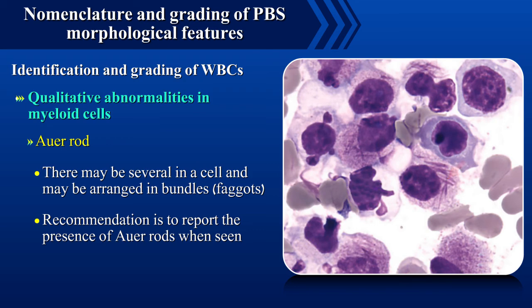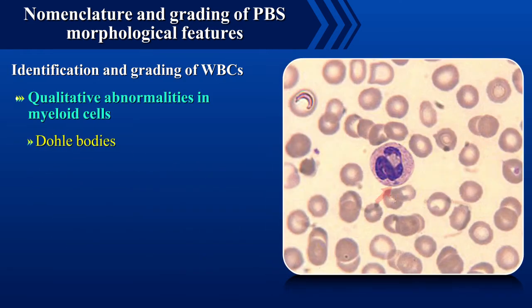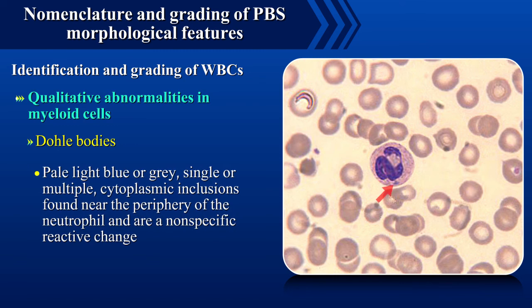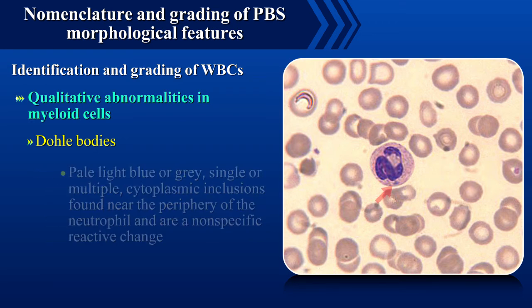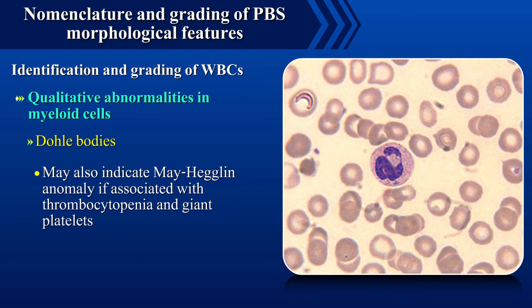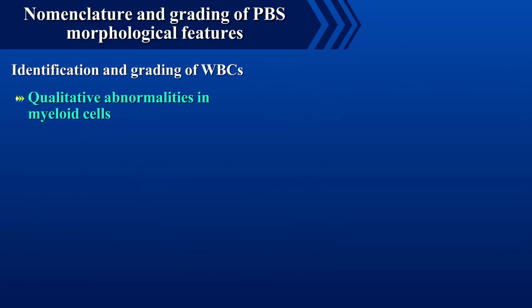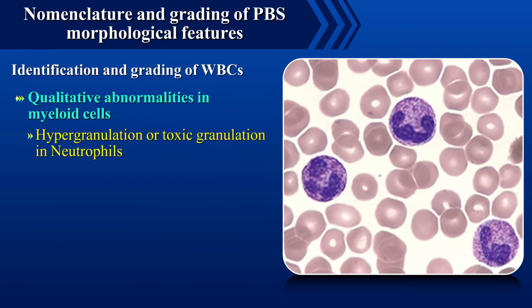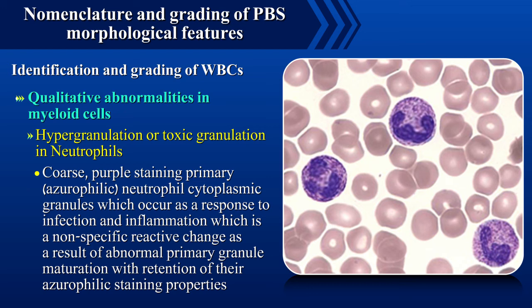The recommendation is to report the presence of Auer rods when seen. Dohle bodies are pale, light blue or grey, single or multiple cytoplasmic inclusions found near the periphery of the neutrophil and are a non-specific reactive change, but may also indicate Mhaglin anomaly if associated with thrombocytopenia and giant platelets. Hypergranulation or toxic granules are coarse purple staining primary or azurophilic neutrophilic cytoplasmic granules which occur as a response to infection and inflammation.